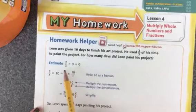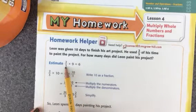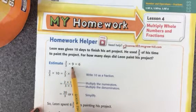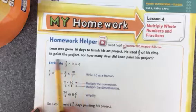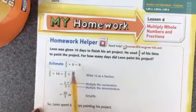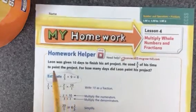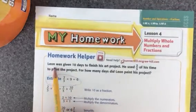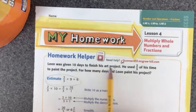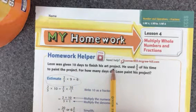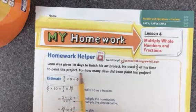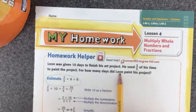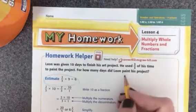Let's look at the example here. We have two-thirds times nine — I've gone ahead of myself, this is the estimate. Leon has taken 10 days to finish his art project. He used two-thirds of his time to paint the project. For how many days did Leon paint his project?